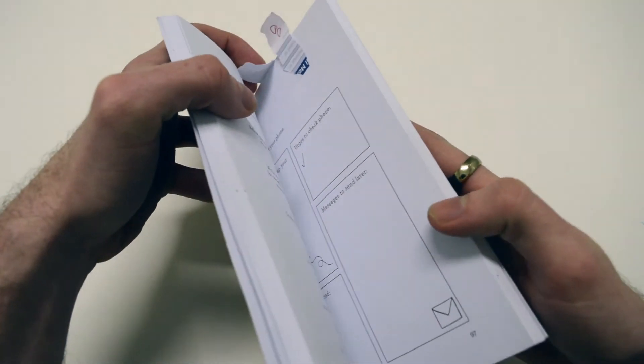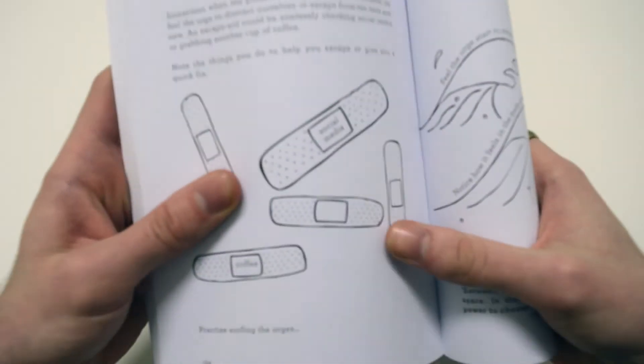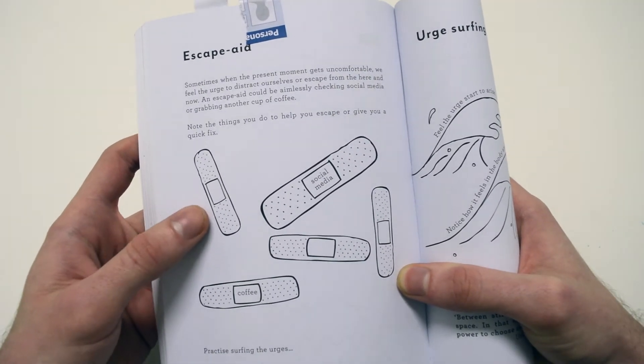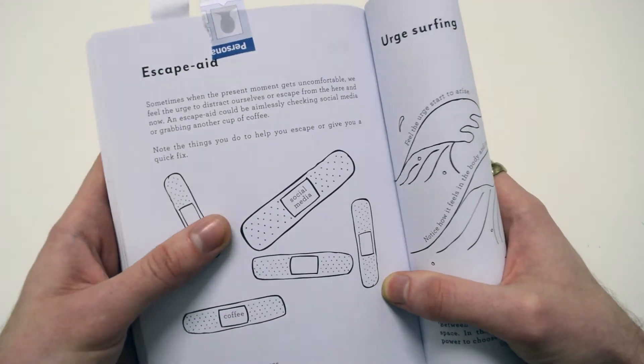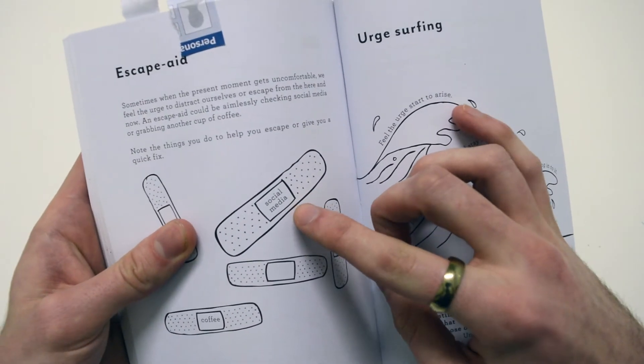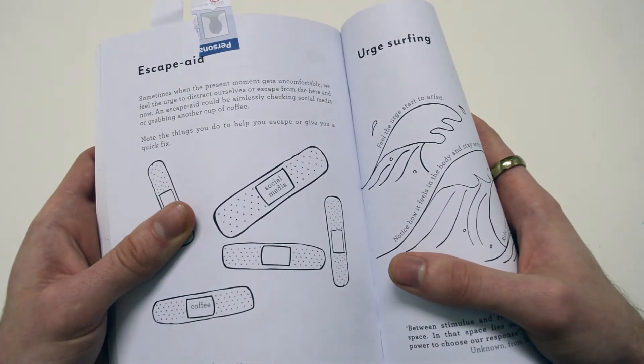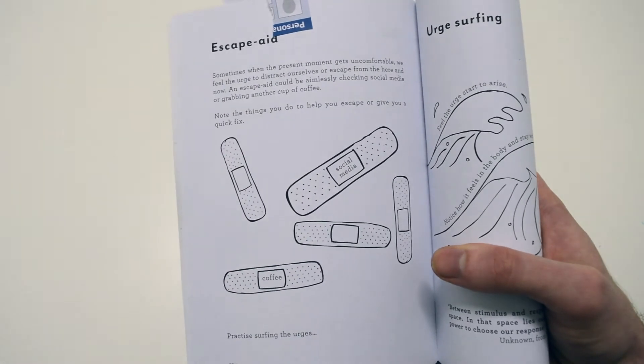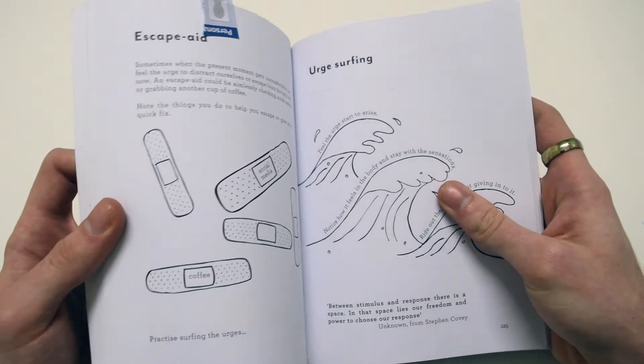There's another page I quite like as well, the Escape Aid page, where it brings attention to situations which you might feel a little bit uncomfortable in and what you do to try and get away from them. Obviously the biggest band-aid on this page is social media. If you're in a semi-awkward situation like waiting for your friend to get back from the toilet, do you just reflexively check social media and start mindlessly scrolling when you could be doing something else really?